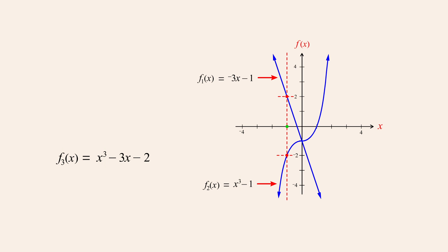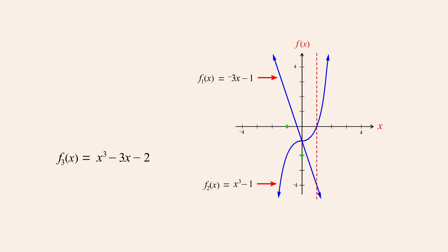Likewise, for an x-value of zero, both functions have a value of negative one, so for that value of x the sum of these functions is negative two. And for an x-value of positive one, the values of the functions are zero and negative four. Therefore, their sum at that x-value is negative four.